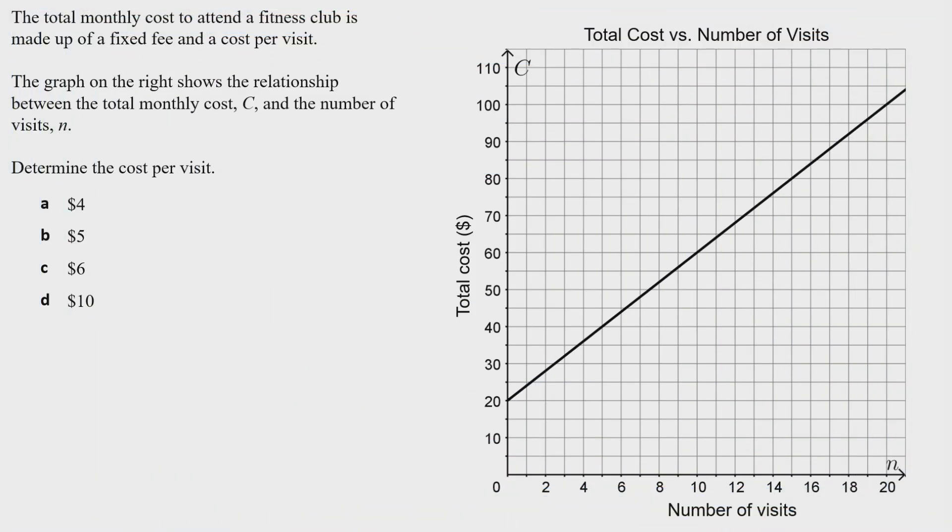In this video we'll look at how to find a rate of change using a graph. In this problem, the total monthly cost to attend a fitness club is made up of a fixed fee and a cost per visit. The graph shows the relationship between the total monthly cost C and the number of visits n. We're asked to determine the cost per visit.